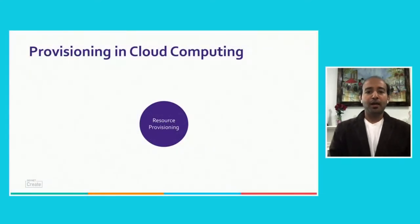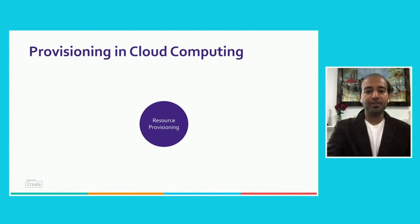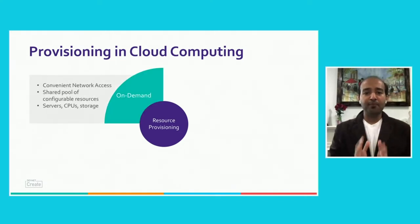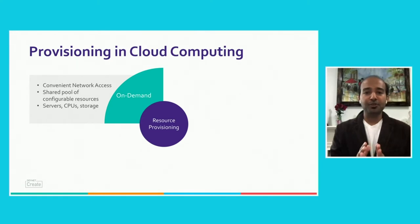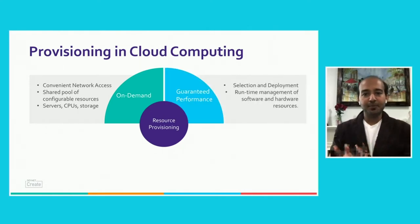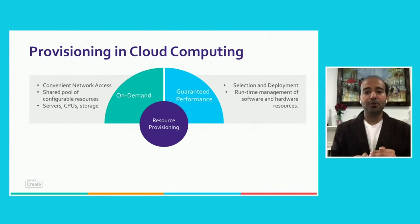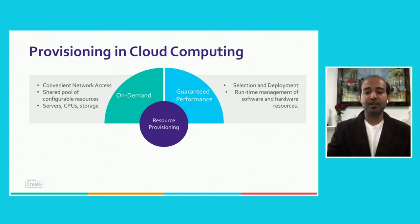Let's quickly jump into what is resource provisioning in cloud computing and why it is so important. When an application is deployed in cloud computing, the most important thing is that resources should be provisioned on demand. As it is network-oriented, we should have convenient network access to different shared pools of configurable resources such as CPUs, RAM, and storage, available to clients on demand. When applications get deployed on the cloud, we have to ensure guaranteed performance by selecting and deploying the right software and hardware resources.